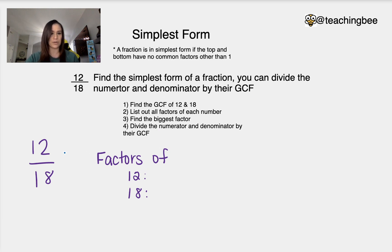We're going to list out all the factors of each number. So in this case it's going to be the factors of 12 and the factors of 18, and then we're going to divide the numerator and the denominator by their greatest common factor.